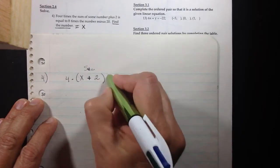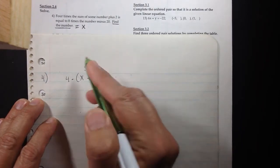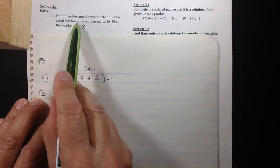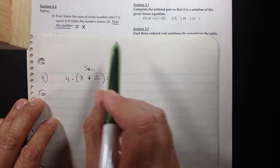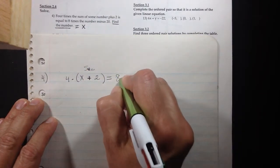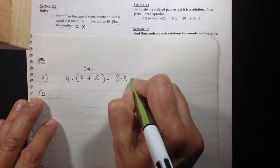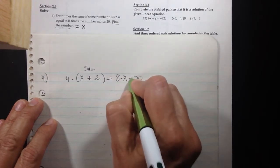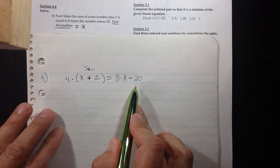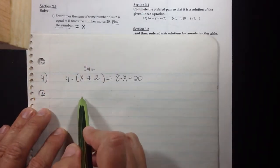Is equal to, so the symbol for is equal to is an equal symbol. Eight times the number minus twenty, so eight times the number minus twenty would translate in symbol form 8X minus 20. Find the number.